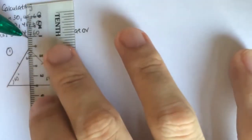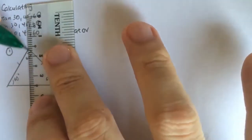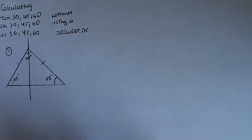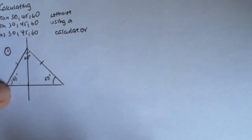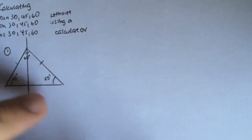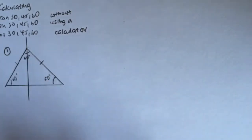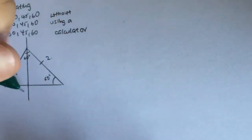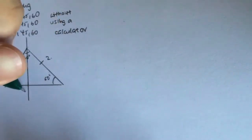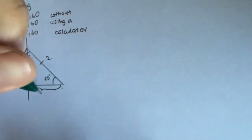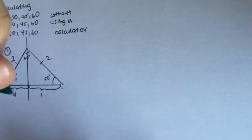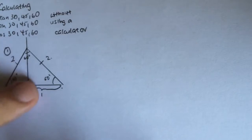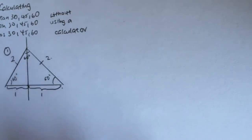Next, we will draw a perpendicular bisector, so the distance from here to here is the same as the distance from here to here. We allocate: this side has 2 units, this has 2 units, and this also has 2 units, so this half will be 1 unit and this half will be 1 unit.